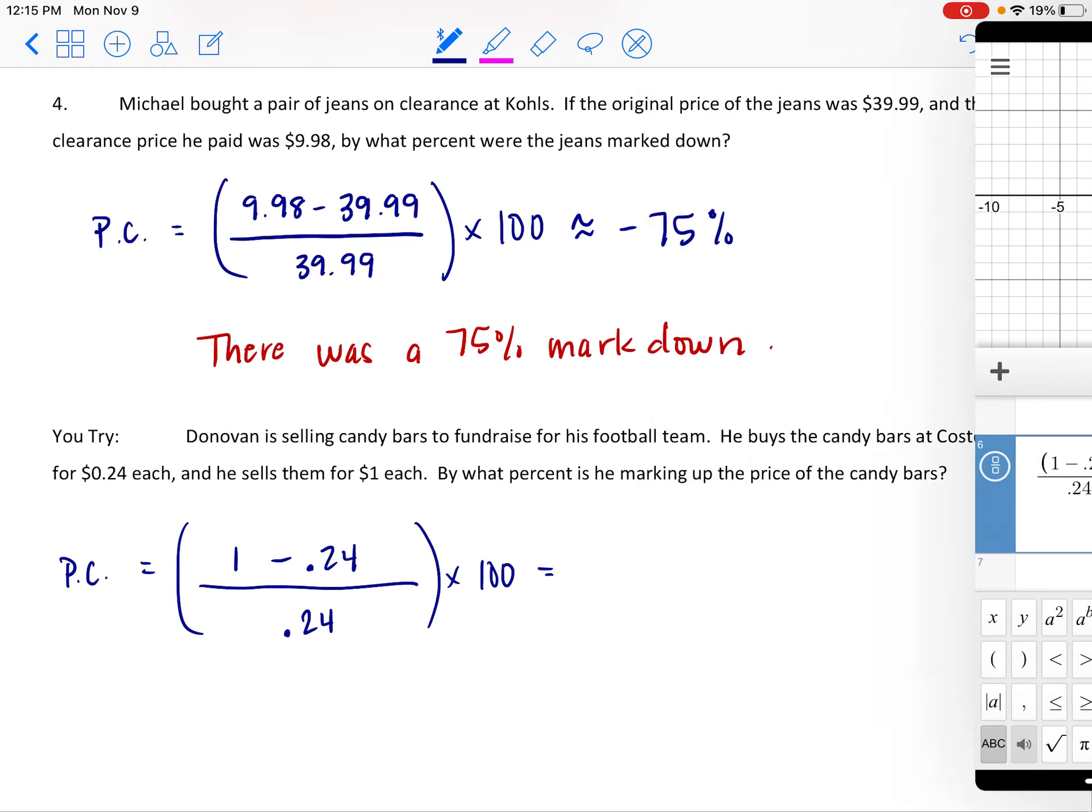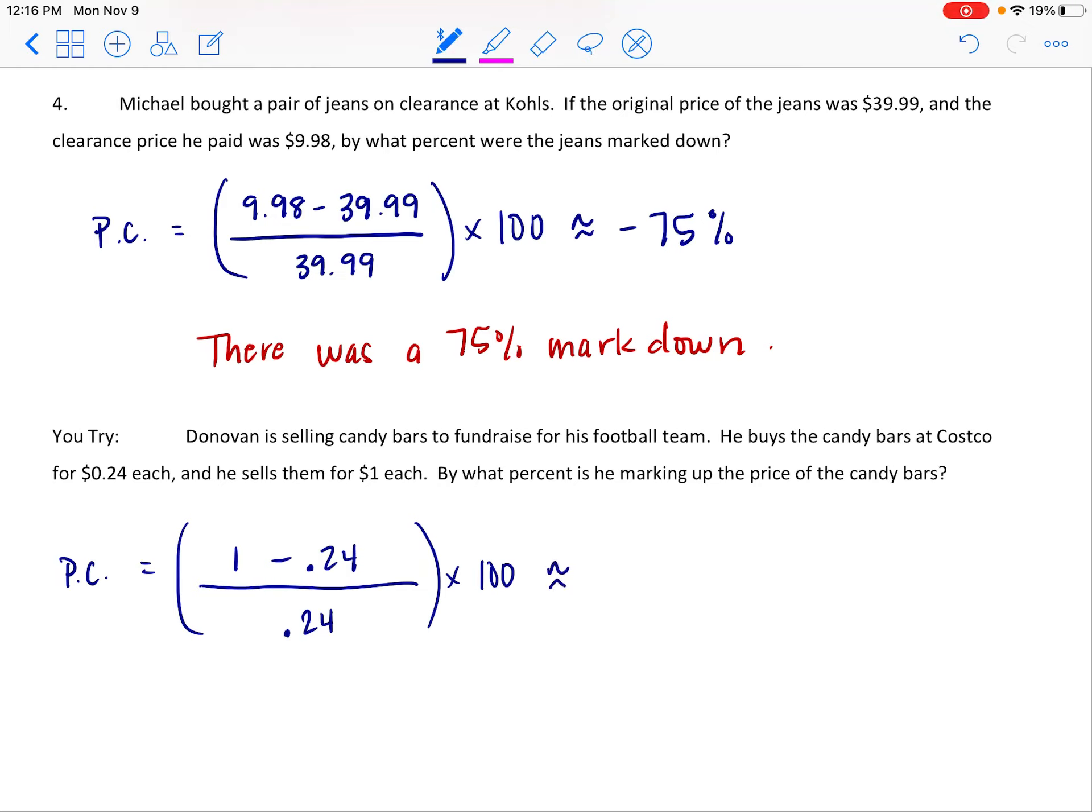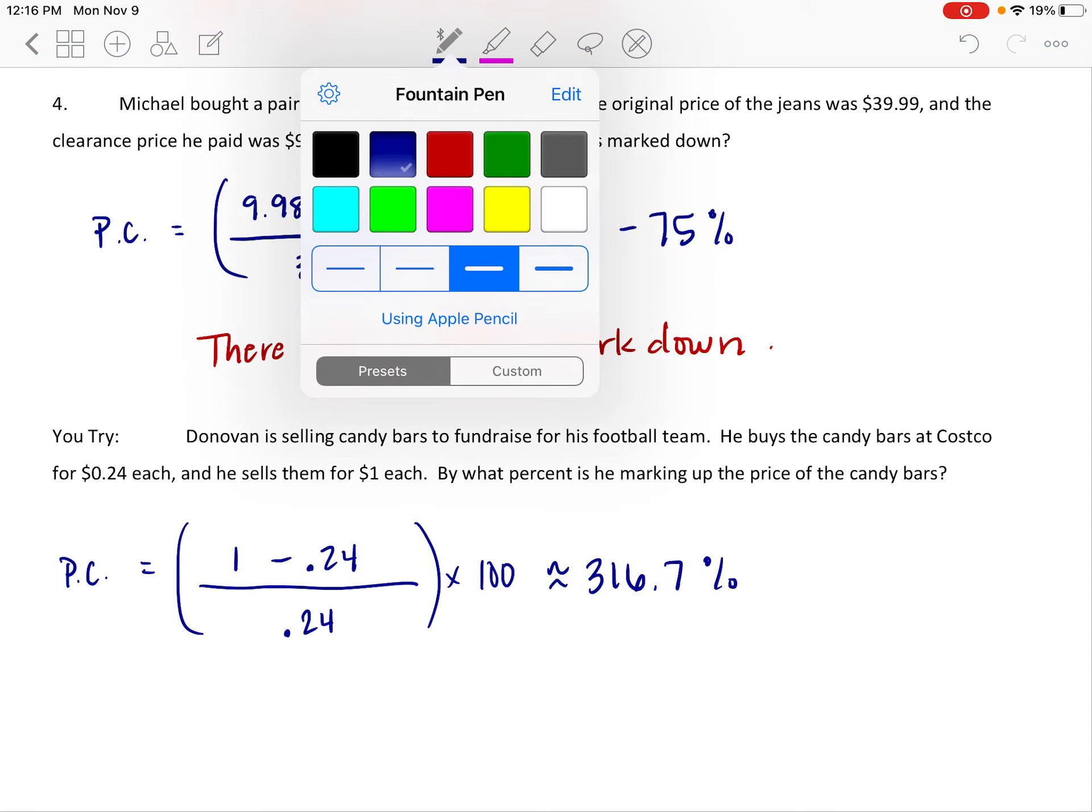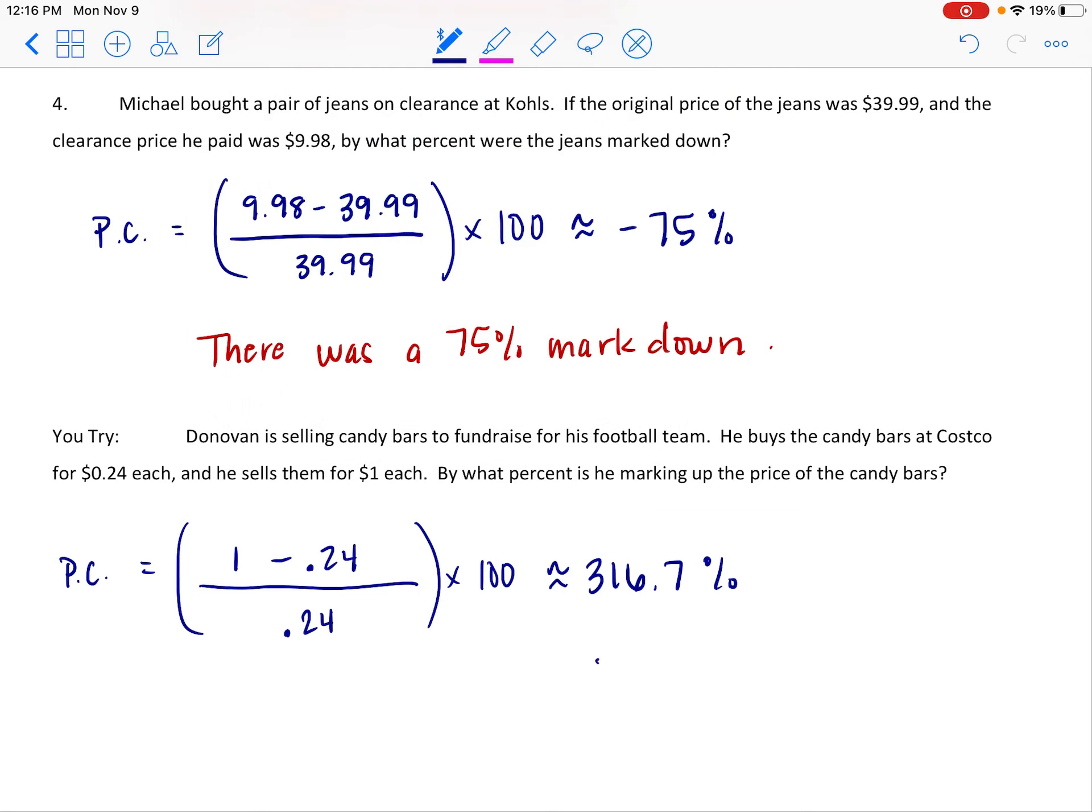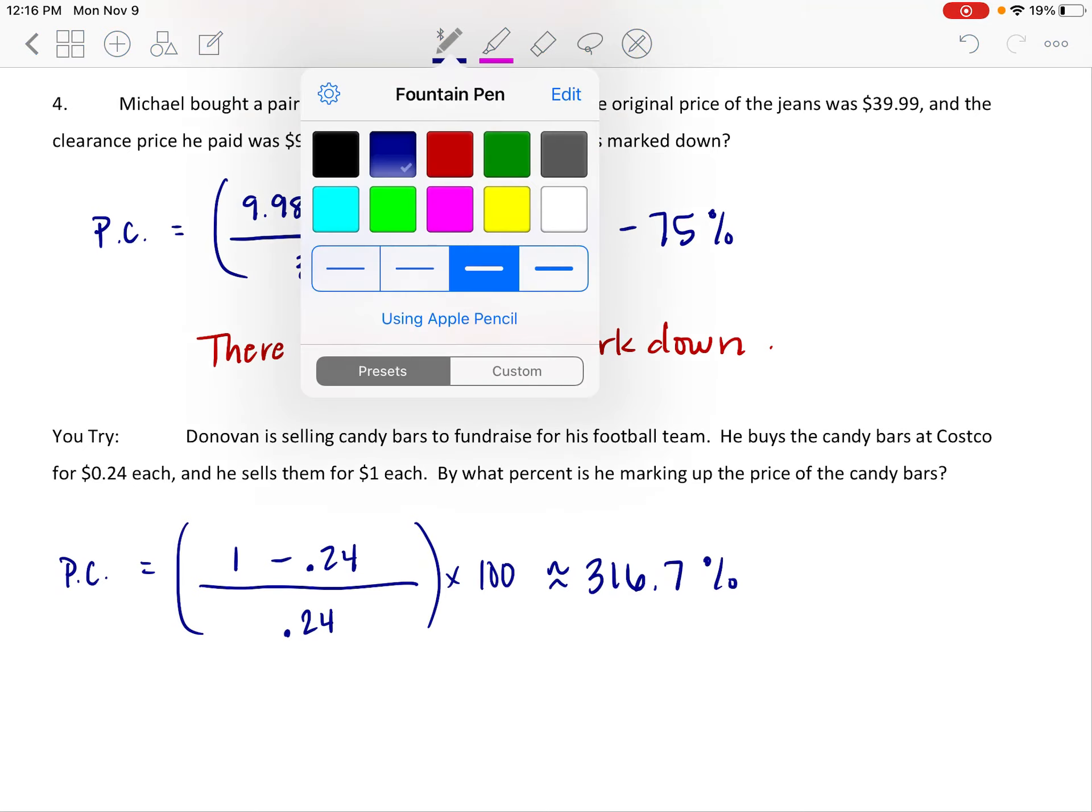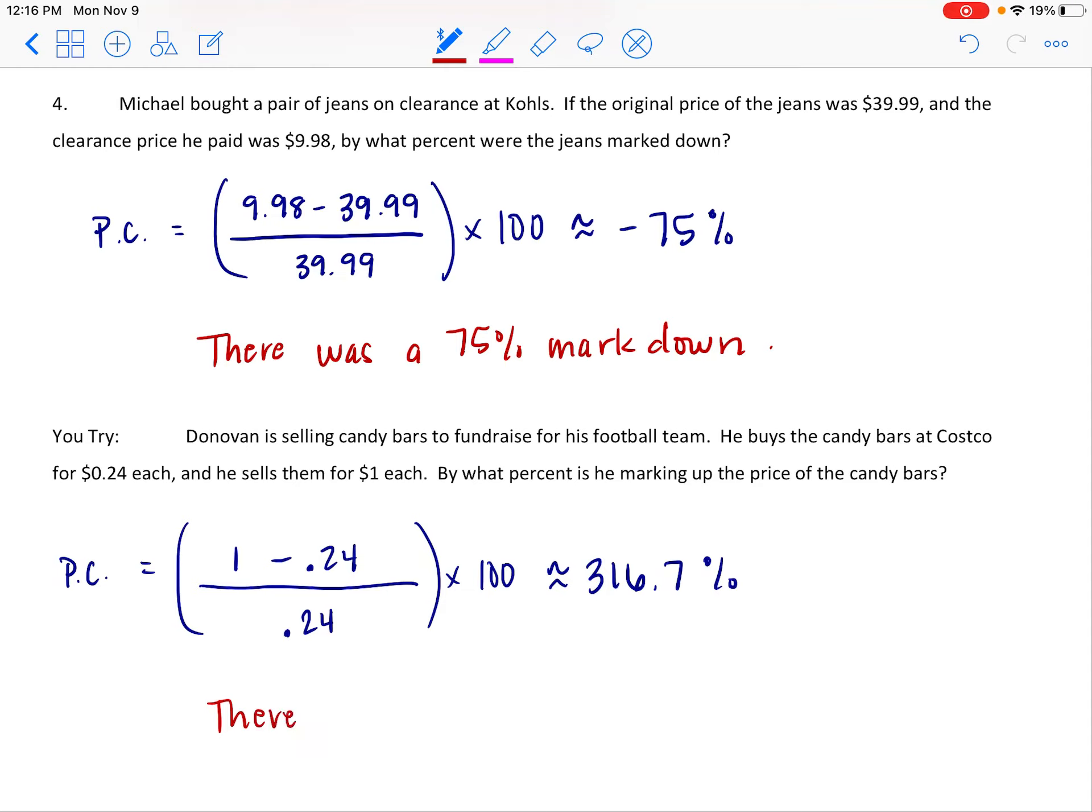We have a dollar minus the 24 cents we started at, and that gets divided by the 24 cents they started at, multiply by 100, and we're looking at a huge markup, 316.7-ish. So this is about 316.7 percent markup. That's ginormous. Think about 300 percent as a decimal, it's about 3.167. That's like three times the amount that it was before. It's craziness. So we're going to say there was a 316.7 percent markup. Way to go, Donovan.